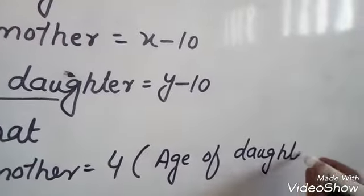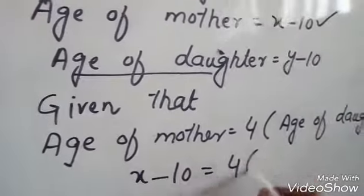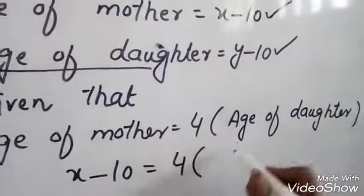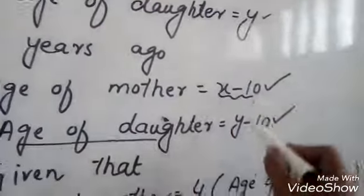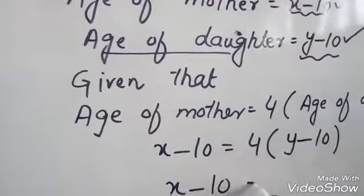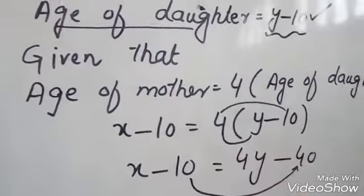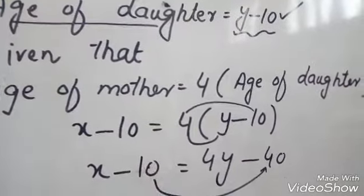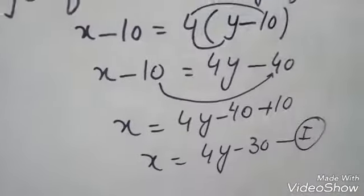So our past condition is: X minus 10 is equal to 4 times Y minus 10. Expanding: X minus 10 equals 4Y minus 40, so X equals 4Y minus 30. This is equation number one.